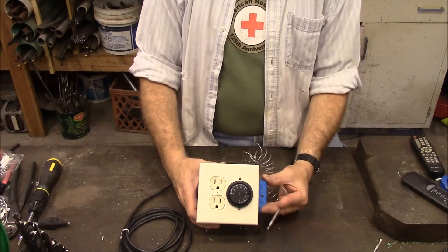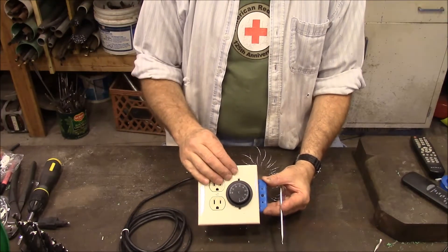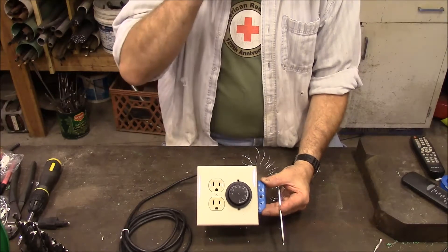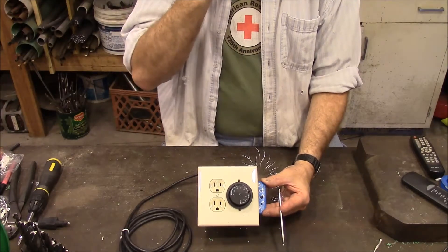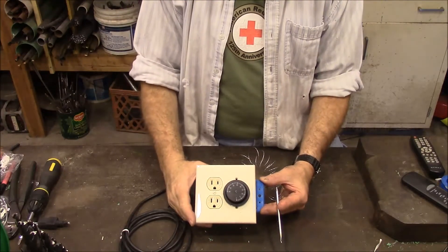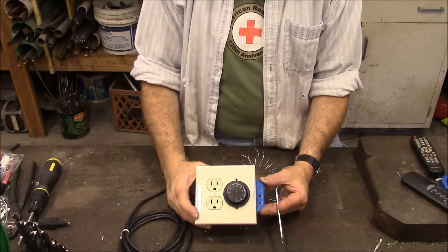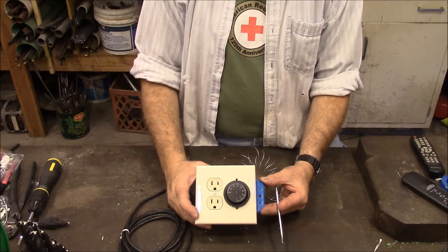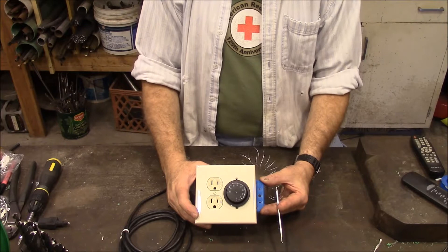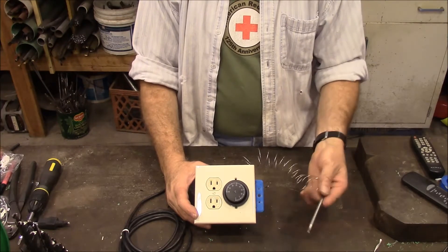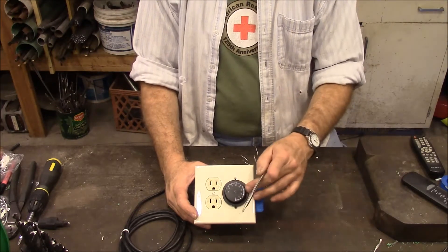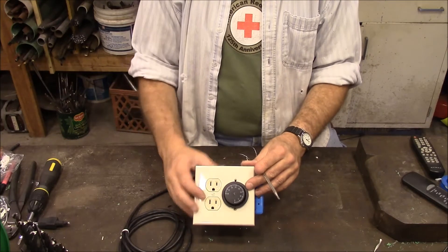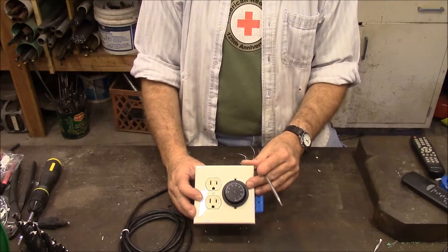Today this is what we're going to make. This is another thermostat controlled switch. I've got other ones out there if you're interested. But this one I wanted to make to use in my barn to control a chicken waterer to keep it from freezing up. It uses a bulb thermostat with an outlet. Let's see how we made this.